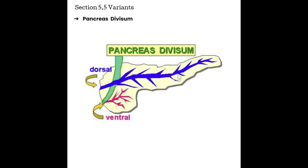In pancreas divisum, the whole dorsal duct has its own second opening into the duodenum, while the ventral duct is the one that connects with the common bile duct and enters through the ampulla of Vater. They have no connection with one another.